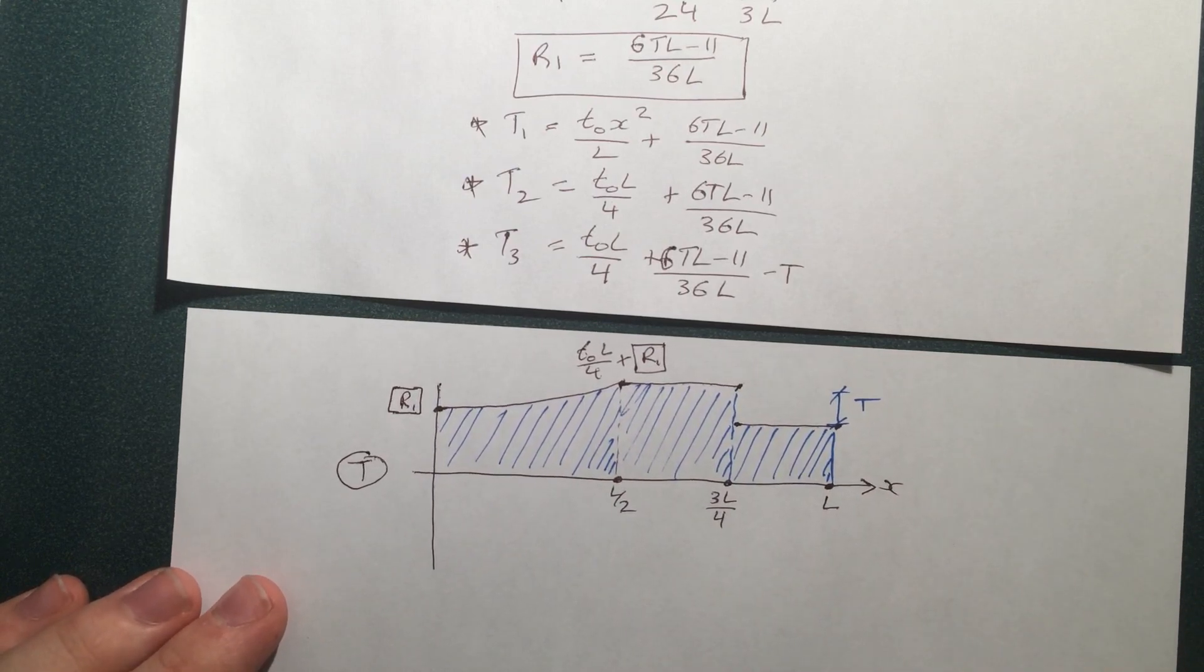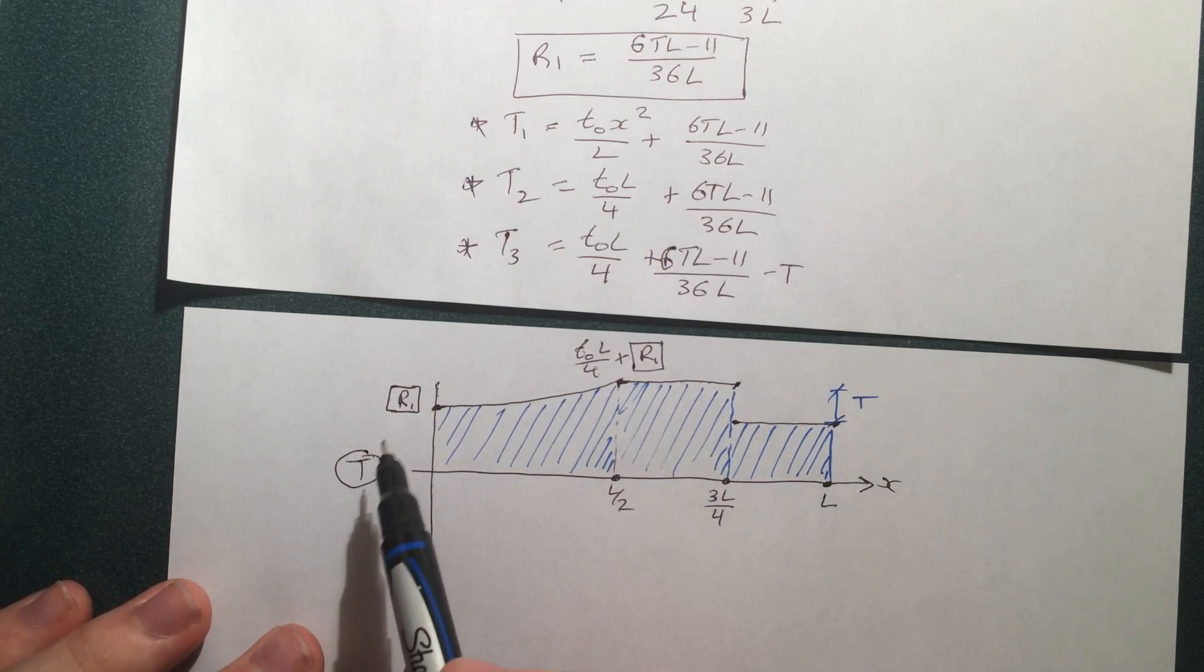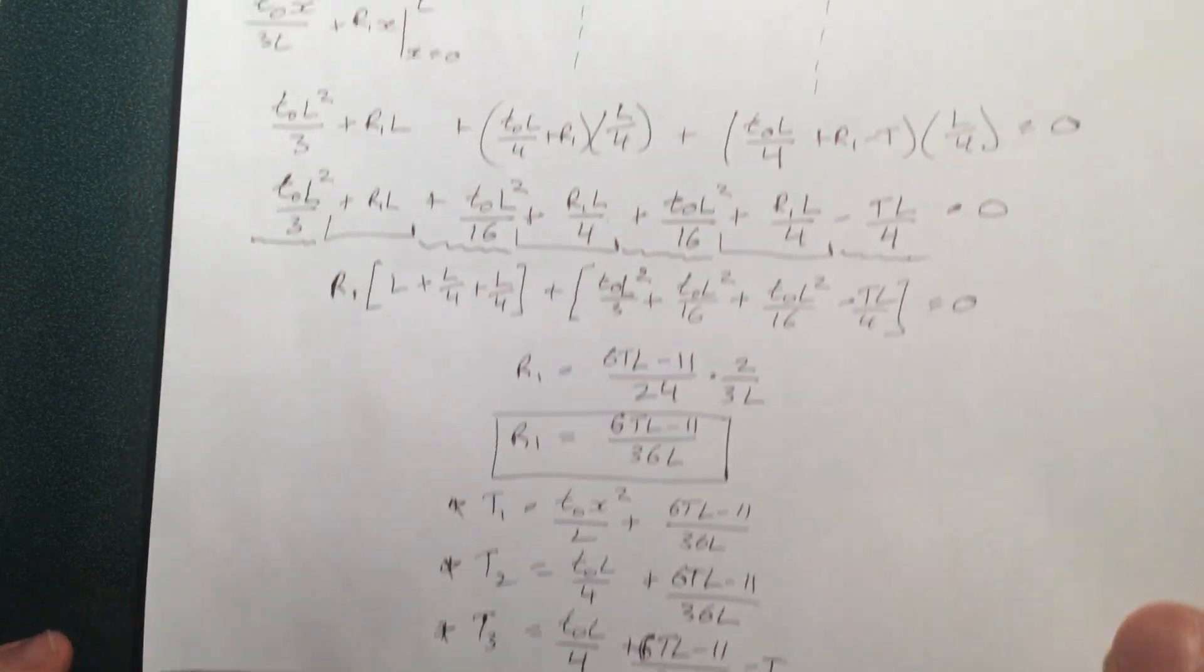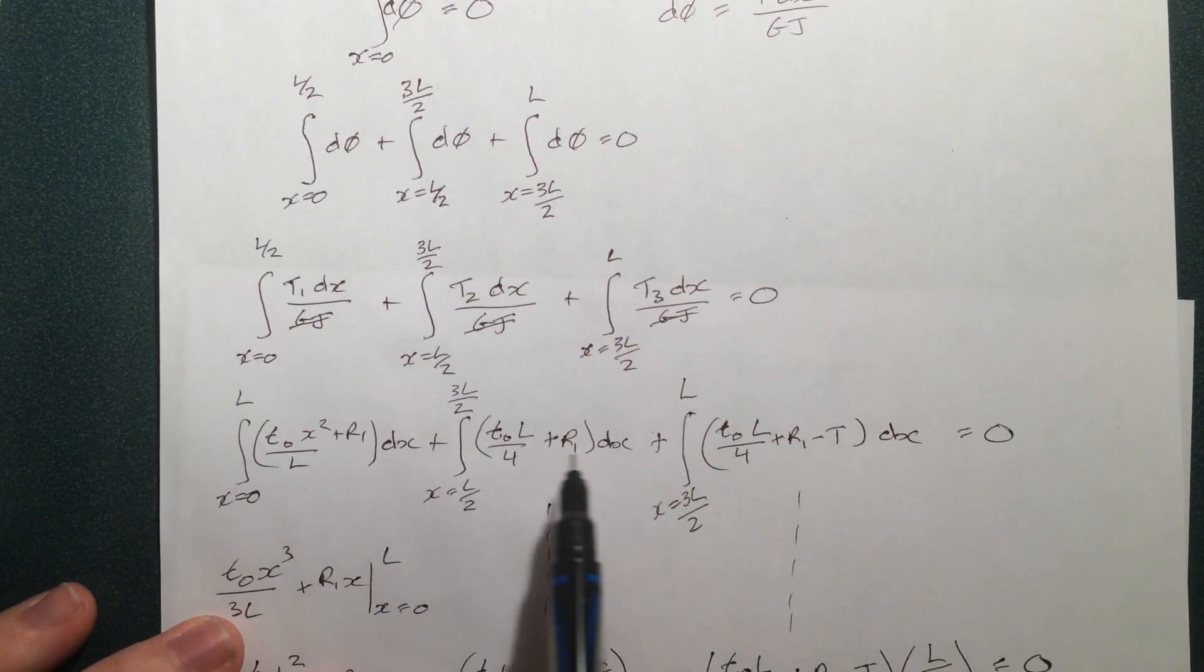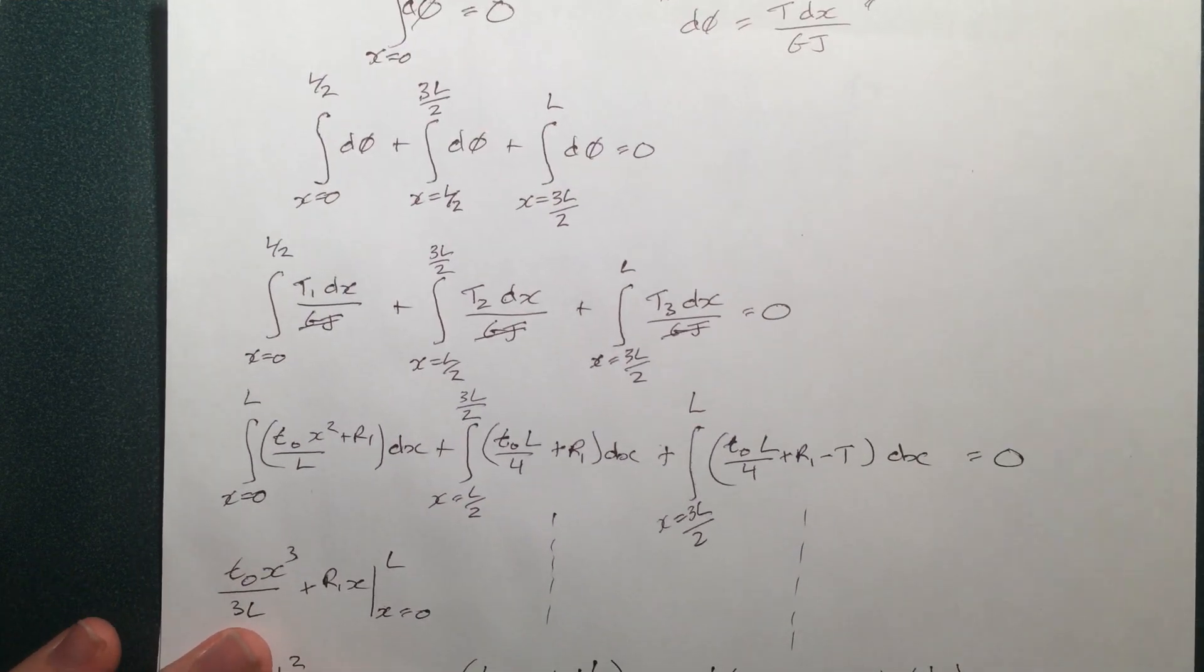There you have it, the distribution of internal torque. So to find phi, we'd have to go and take our torques and plug it back into the equation we had over here. Now that we know R1, we could find phi. But as you can see, it would take a long time to do that.